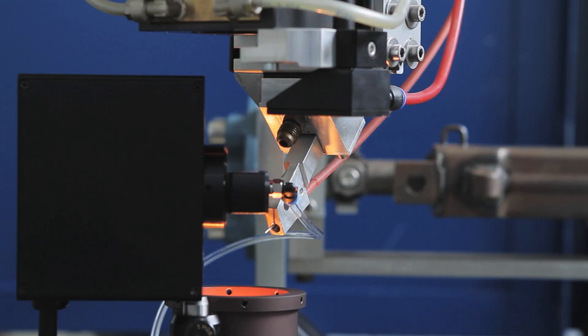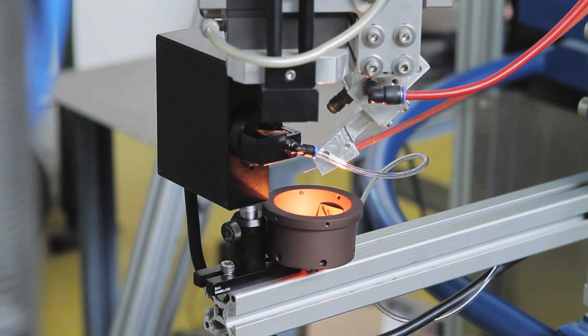For display demonstration, the main beam is directed to an aluminum beam damp. Within the process, it gets partially melted.